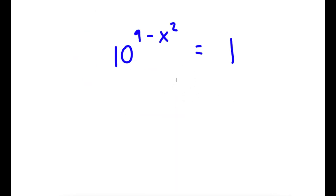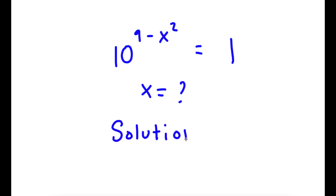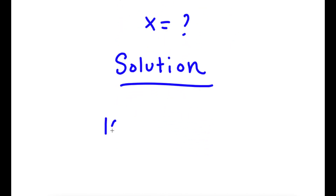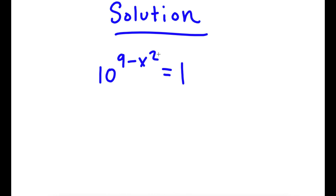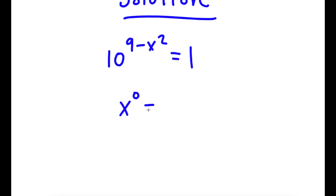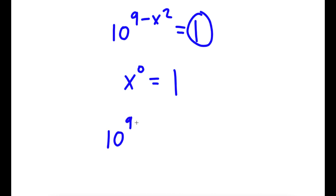So in this problem, I have 10 to the power of 9 minus x squared is equal to 1. I obviously want to find the value of x. I first start with 10 to the power of 9 minus x squared is equal to 1. Any number to the power of 0 is simply 1, so I'm going to rewrite 1 as 10 to the power of 0. Now I have 10 to the power of 9 minus x squared is equal to 10 to the power of 0.